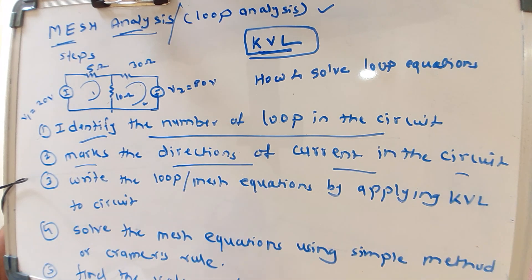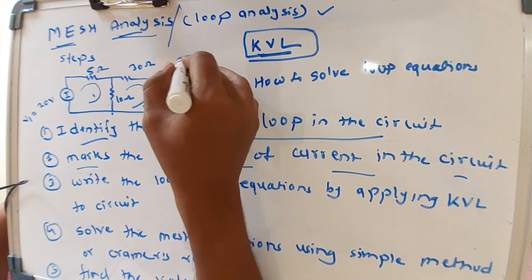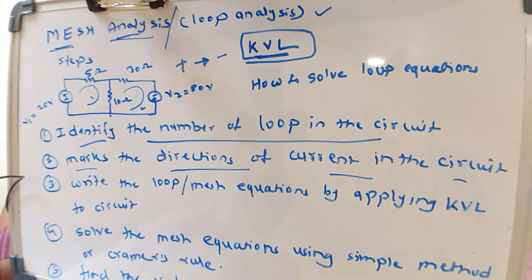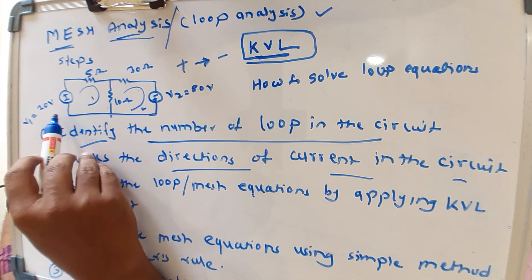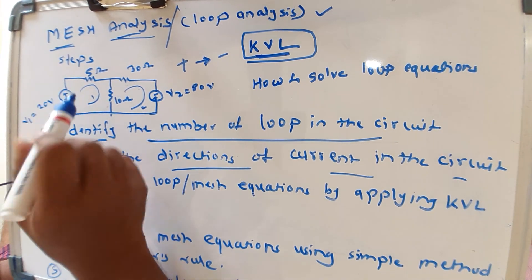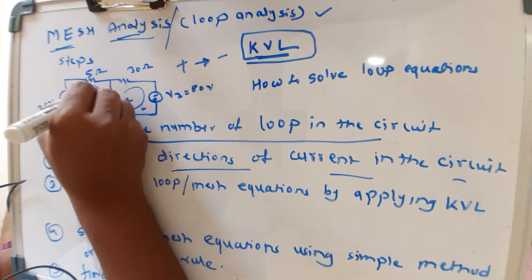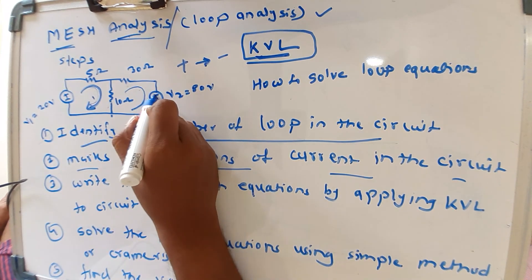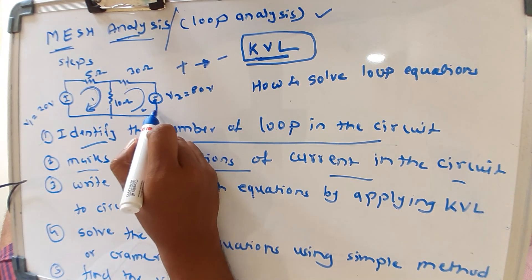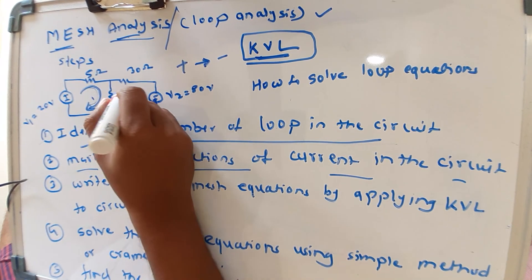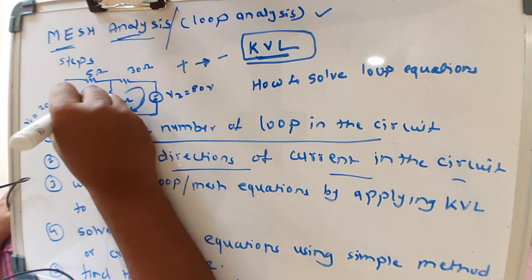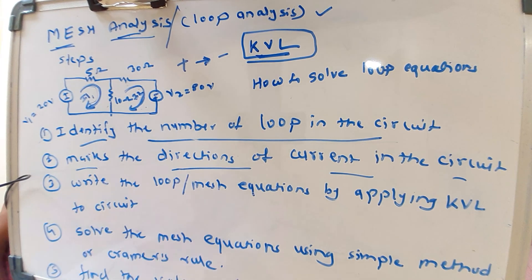The second step is to mark the direction of current in the circuit, which depends on the voltage source. Always remember: current flows from plus to minus. V1 is 20 volts with polarity plus to minus, so current I1 flows in that direction. For V2, the polarity is reversed — minus to plus — so current I2 flows accordingly. I1 is assigned to the first loop and I2 to the second loop.